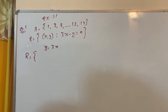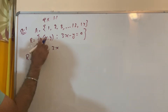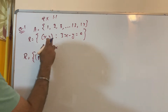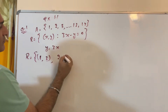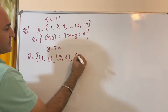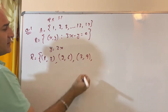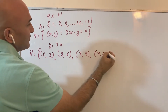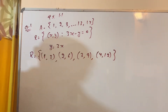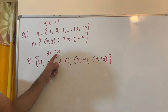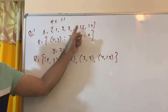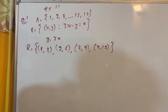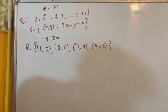Remember one thing: both x and y should come from set A only. You cannot get values from outside this set. If x is 1, y will become 3. If x is 2, y will become 6. If x is 3, y will become 9. If x is 4, y will become 12. You cannot take anything else — if you take x as 5, then y will become 15, and 15 does not belong to set A.